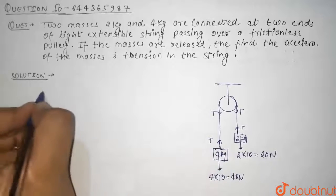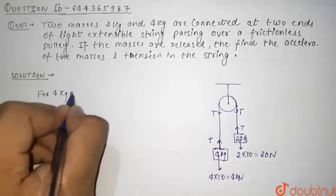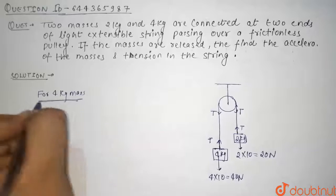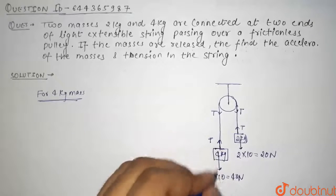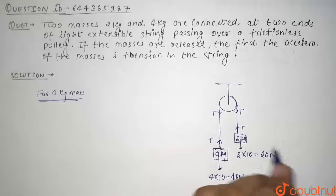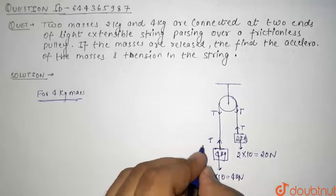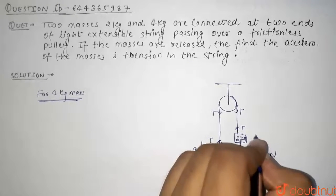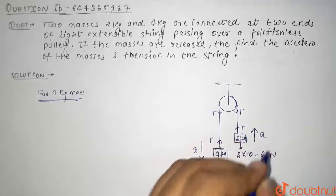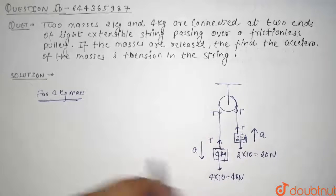Now for 4 kg mass, for 4 kg mass we can write it as: since its weight 40 newton is greater than the weight of 20 newton, so it will move downward with acceleration a and it will go with acceleration a. So for 4 kg block we can write it as